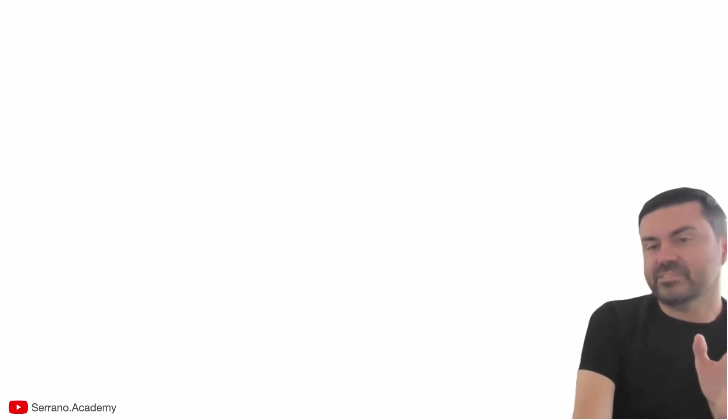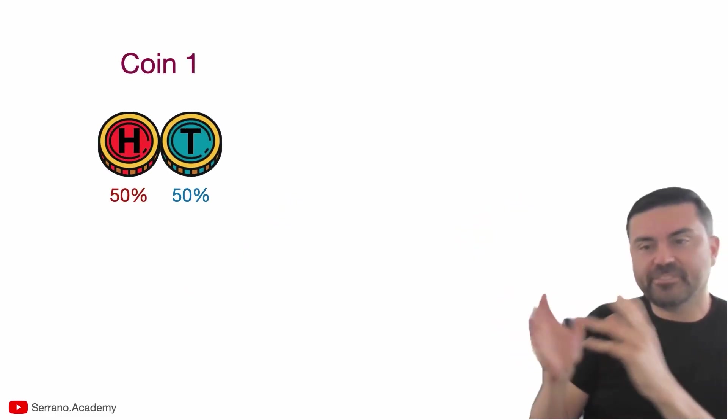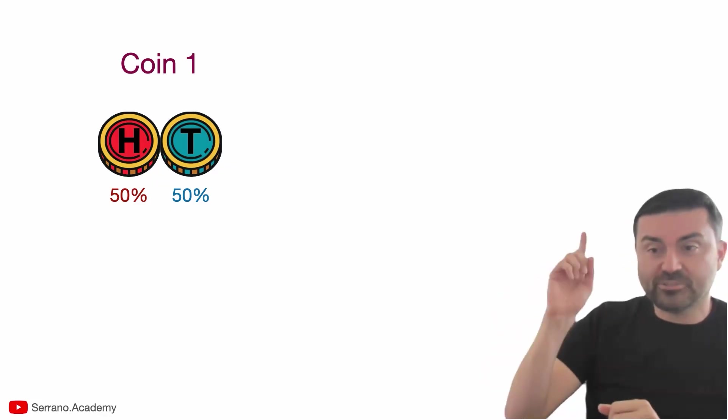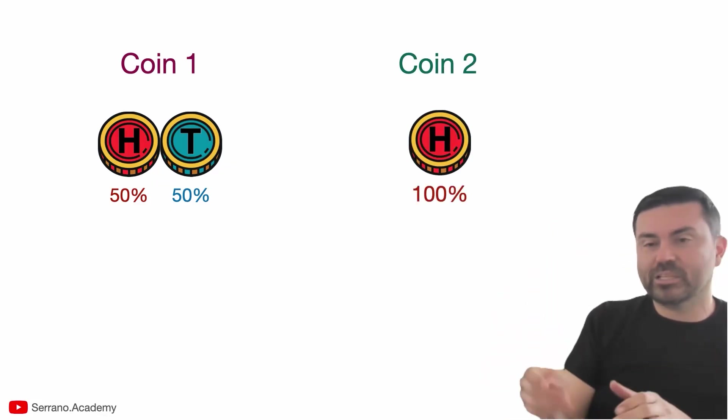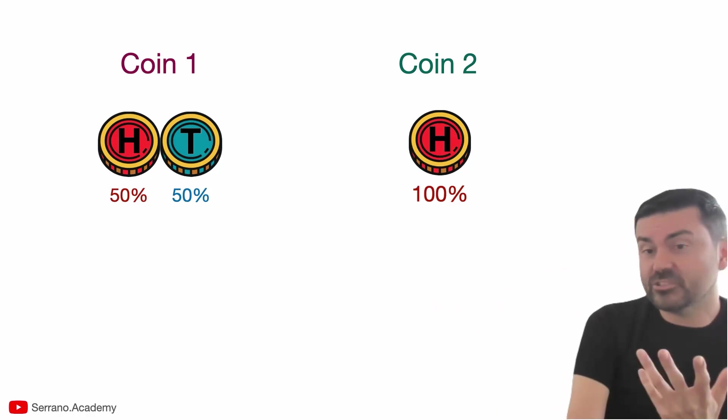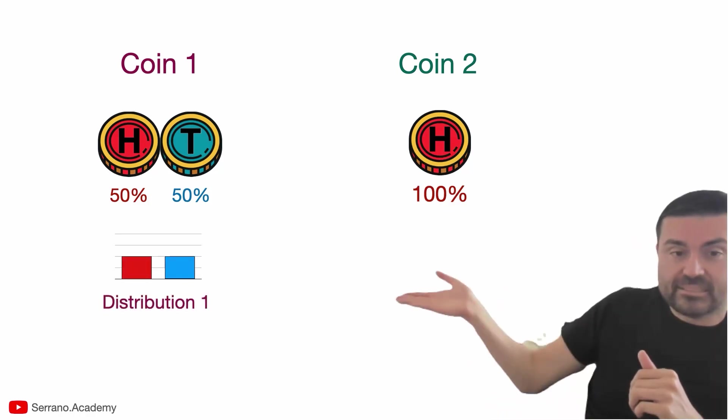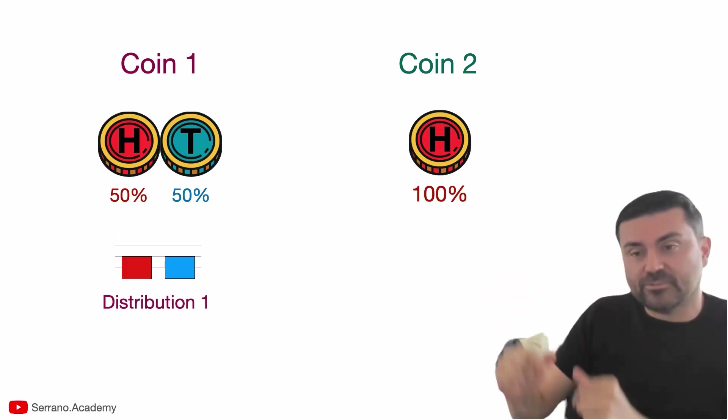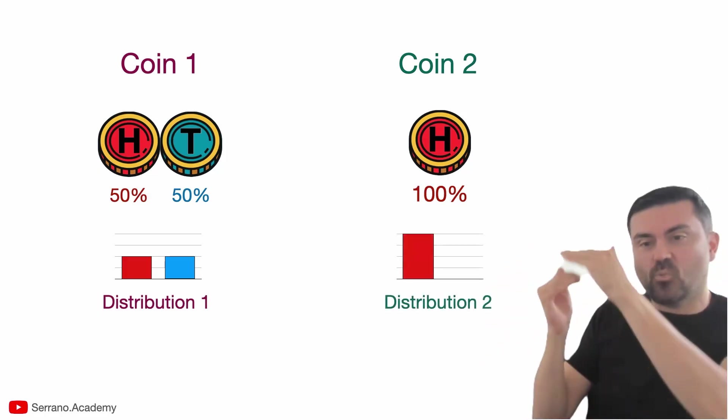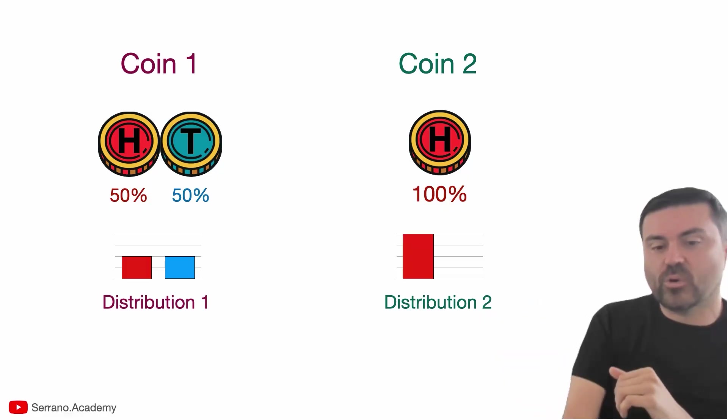So now let's do a numerical example with the simplest distribution I can think of: a fair coin. A fair coin has a 50-50 chance of landing in heads or tails. That's my distribution one. And my distribution two is a biased coin, one that, whatever I do, it always lands in heads. So somebody has doctored the coin so that it always lands in heads. How do distributions look like? Well, the first one has a 0.5 length bar and a 0.5 length bar, one for heads and one for tails. And the other one has just a one length bar for heads and a zero for tails. That's distribution one and two.